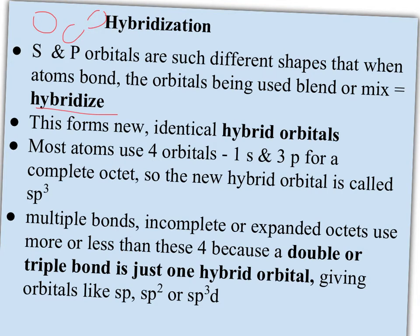So it forms new identical hybrid orbitals. So if there's two bonds, then it forms two identical hybrid orbitals. If there's four bonds, then it forms four hybrid orbitals. So most atoms use four orbitals because it'll have a total of four pairs that need somewhere to go. And so usually it's going to use its one S orbital and its three P orbitals from each atom. And so the new orbital is called SP3. And if you look, think of this as S1, P3, it's just telling you four orbitals have been combined.